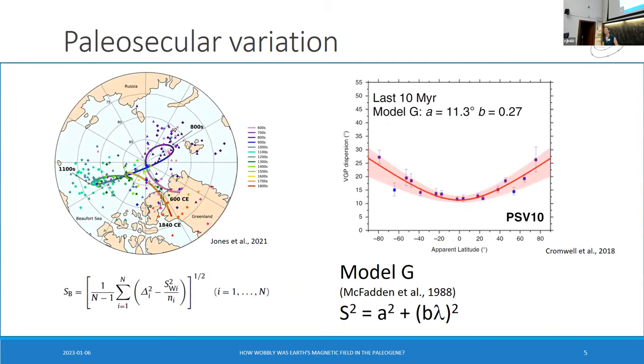But most of what I'm going to focus on today is paleosecular variation. Now I imagine most people here know what that is. Just in case you don't, the Earth's magnetic field is not exactly aligned with the spin axis. It wobbles over time. And we can observe that directly for the last few hundred years. We can observe that over time, and if we go further back in time, we can observe this from the rock magnetic record. And we look at how much that PSV scatter. So this is the dispersion in the paleomagnetic poles, changes with latitude. We use something called Model G to describe this. So it's really just a simple S squared is equal to A squared plus B times lambda squared, where lambda is the latitude. We get higher scatter at higher latitudes.